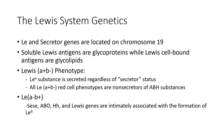We are going to talk about the genetics that generate each phenotype. The Lewis A positive, B negative phenotype is produced when Lewis A substance is secreted regardless of secretor status. So if you have a capital LE gene, you can make Lewis A antigens and they will be in your secretions. All Lewis A positive, B negative phenotypes are non-secretors of ABH substances.